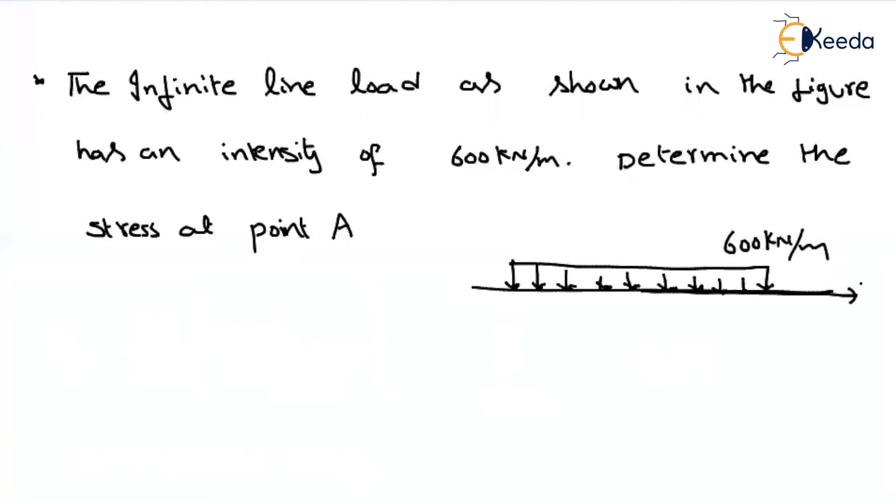600 kN per meter. And what is the reference axis? X. What is the reference axis? Z. So they are asking us to find out the stress at point A. So the coordinate for the given point is 5,4. That means X equal to 5 meter, Z is equal to 4 meter.